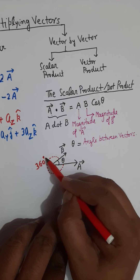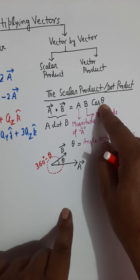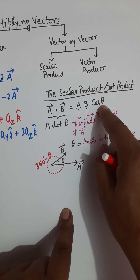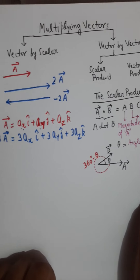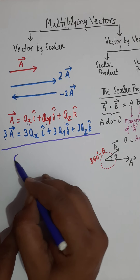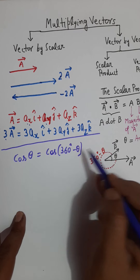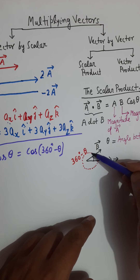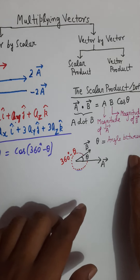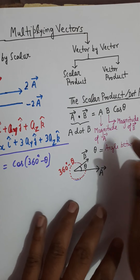One important point: if the angle between A and B is theta, the remaining angle around them would be 360 degrees minus theta. Because cosine of theta equals cosine of (360 minus theta) in trigonometry, for the dot product you can choose either the smaller angle or the larger angle between A and B — both give the same result.